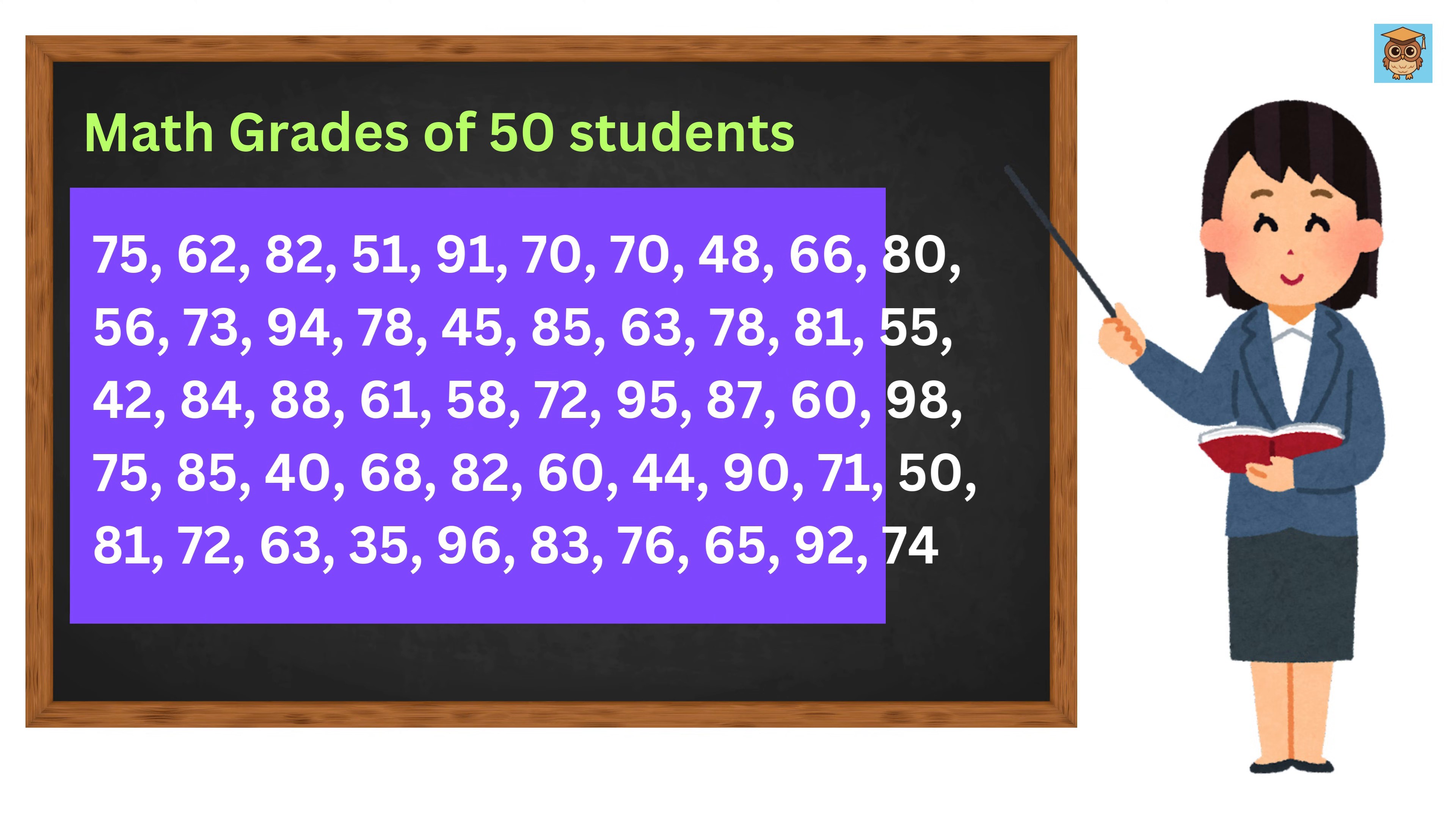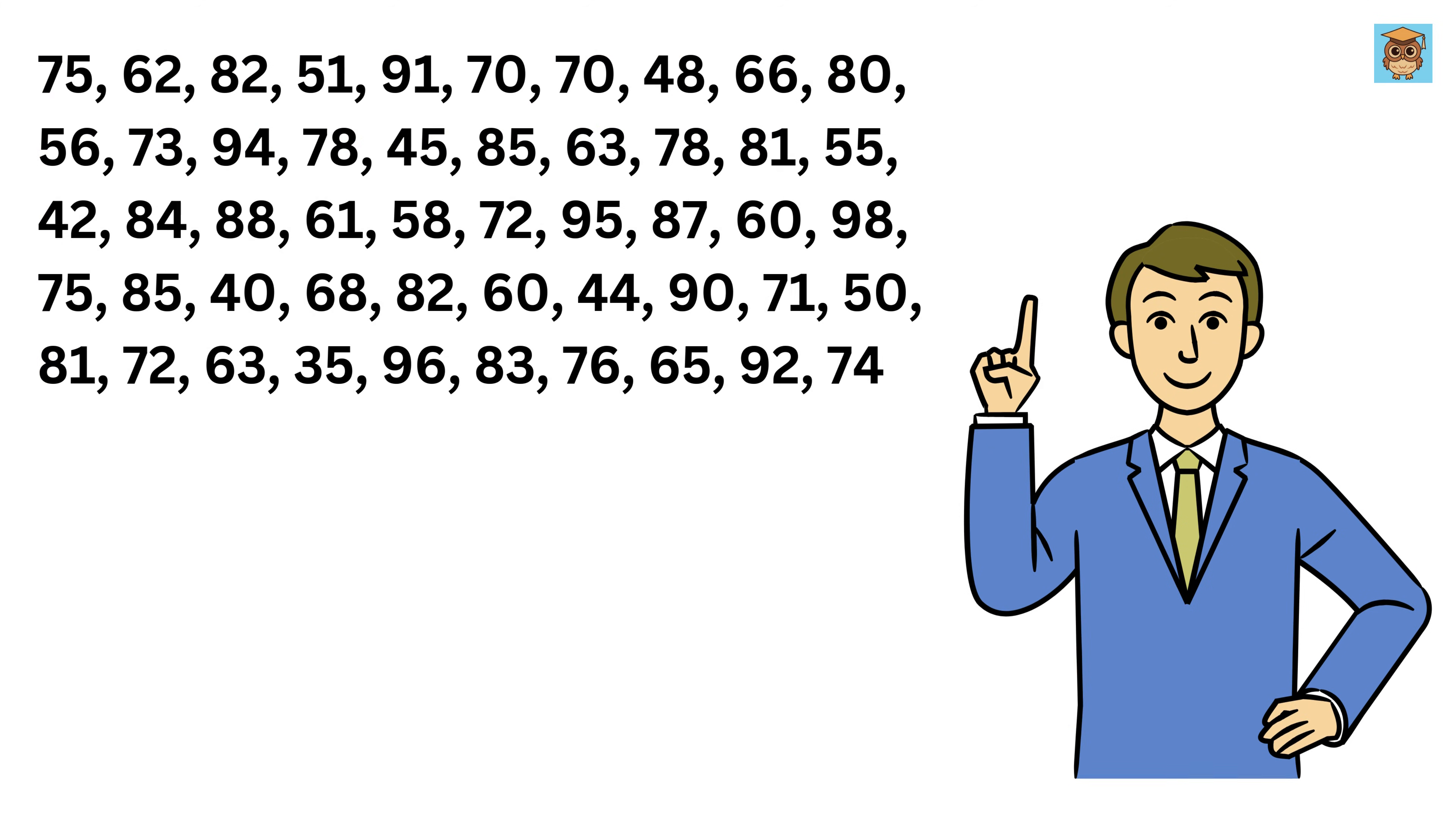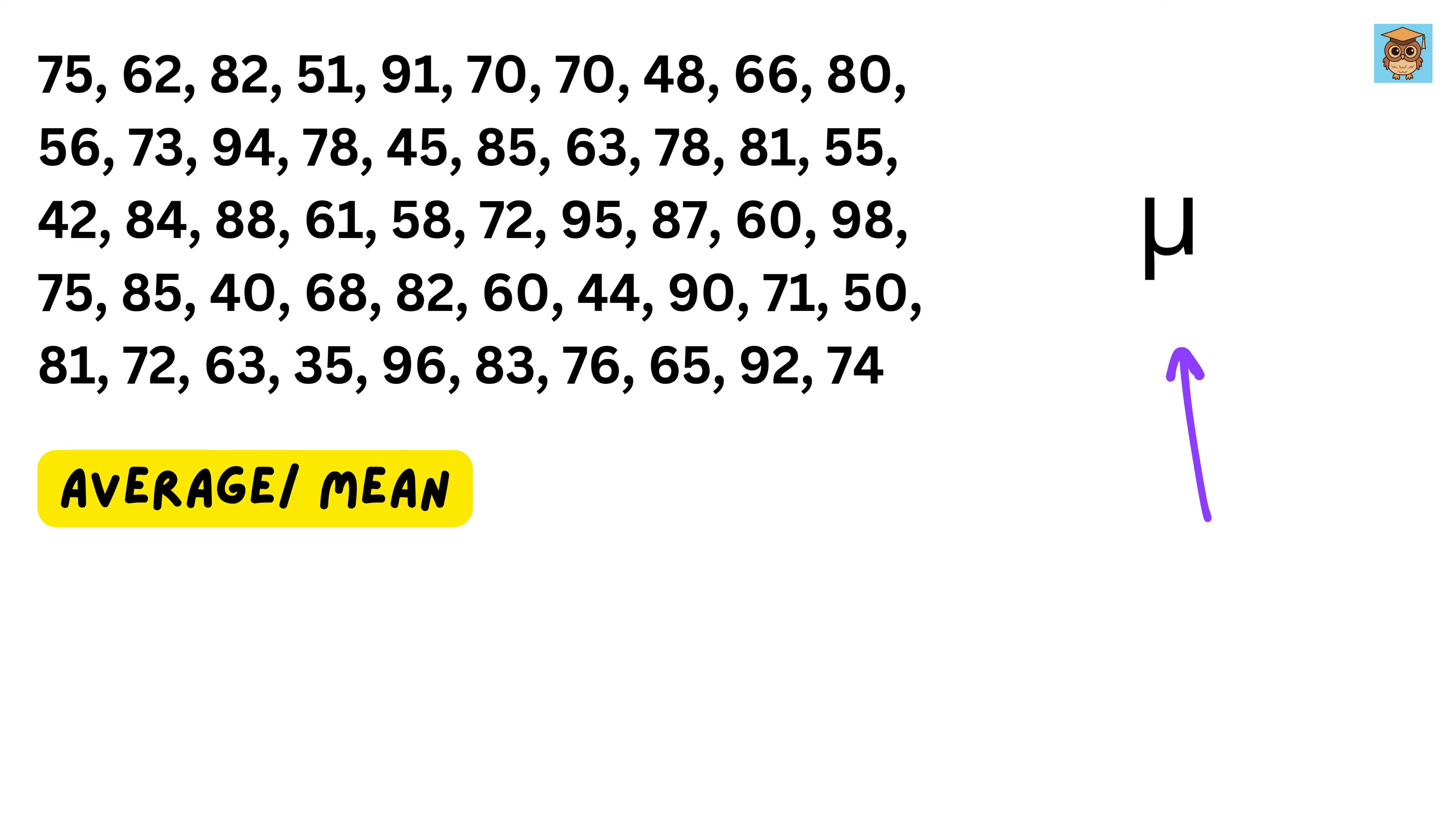Now, instead of going through all 50 marks one by one, you need a single number that represents the overall performance of the class. To find this, we calculate the average, also called the mean. This gives us a central value, a quick way to understand where most students stand. We use this symbol μ to represent mean. But how do we find it?